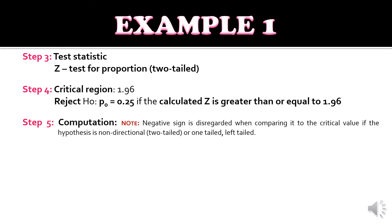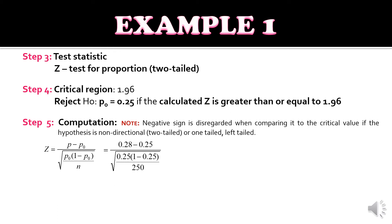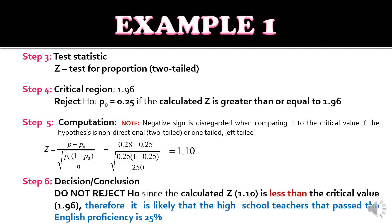For step five, we compute the Z-test. Since we're using two-tailed, the negative sign is disregarded when comparing to the critical value. Substituting values: Z equals 0.28 minus 0.25 divided by the square root of 0.25 times 1 minus 0.25 all over 250, giving Z equals 1.10. For step six, we do not reject the null hypothesis since the calculated Z of 1.10 is less than the critical value of 1.96. Therefore, it is likely that the proportion of high school teachers who passed the English proficiency is 25%.